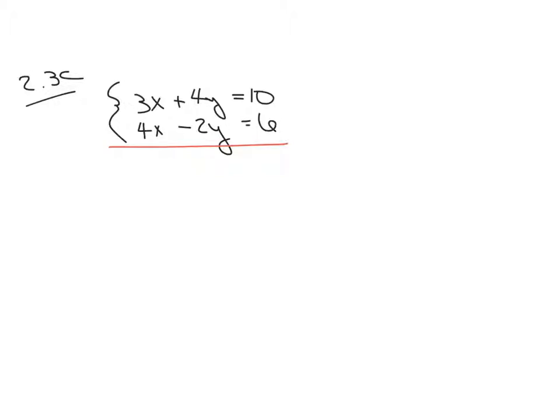So what we're going to do is we are going to add these two equations together. Now, if I added these two equations together, I would get 7x plus 2y equals 16. Alright, notice what I have. I have one equation, but I still have two variables. So that doesn't work.